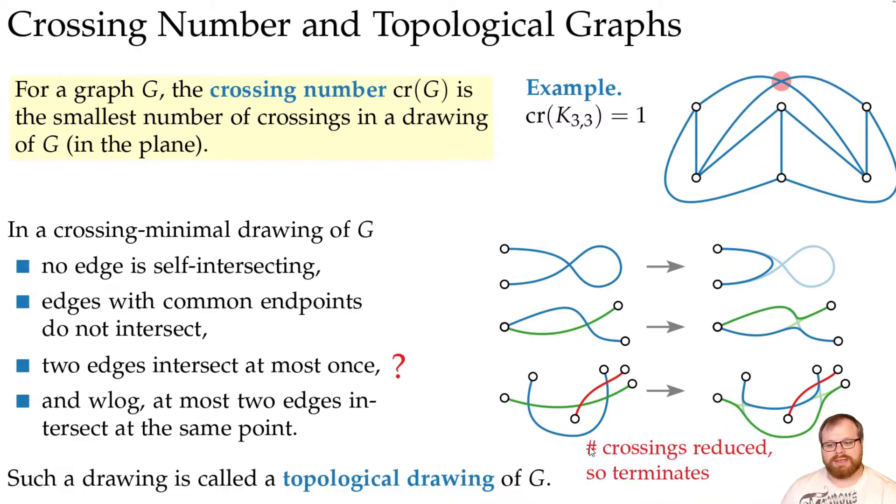But still, the number of crossings in total is reduced by two. So if we repeat this procedure, at some point it terminates, because we can only have a finite number of crossings between any pairs of edges, so only a finite number of crossings in total.